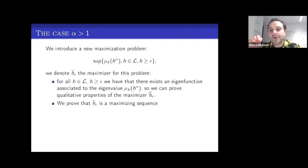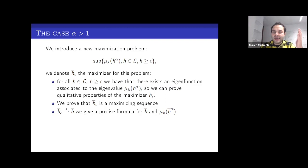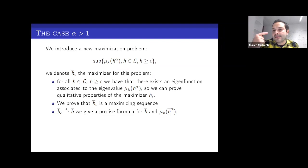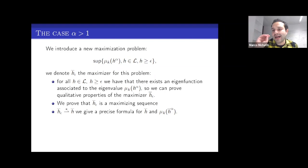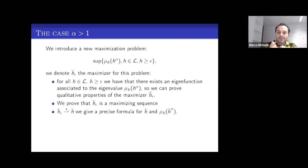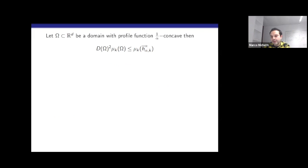A technical part — one of the main parts of the proof for alpha strictly greater than one — is proving that h_bar_epsilon is a maximizing sequence. Then h_bar_epsilon converges in weak-star L^infinity to a function h_bar that is the maximizer. Thanks to the qualitative properties known for h_bar_epsilon, we are able to find qualitative properties of h_bar and also show that there exists an eigenfunction associated to mu_k(h_bar^alpha). When we do not know in general the existence of an eigenfunction, we construct a maximizing sequence for which eigenfunctions do exist, do the work, and then the end of the proof is the same as before.